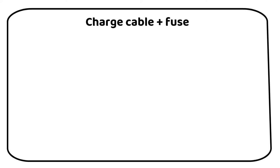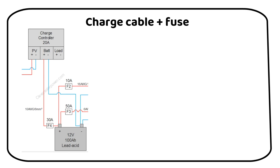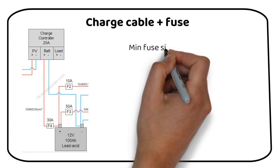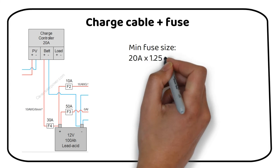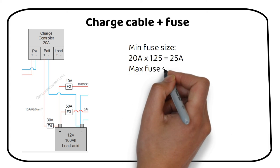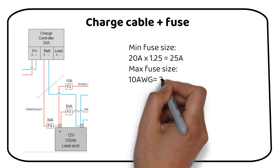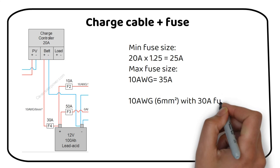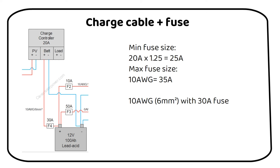Lastly we must select the wire from the charge controller to the battery. The charge controller will put a maximum of 20 amps into the battery. So we need a wire that can handle 20 amps. To calculate the minimum fuse size we have to calculate the current that goes through the wire, which is 20 amps. We multiply that by the 1.25 safety factor to become 25 amps.